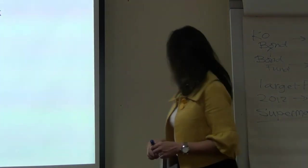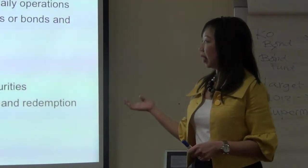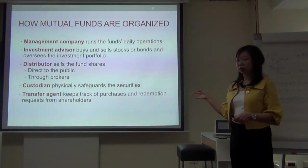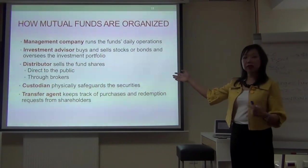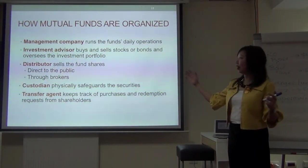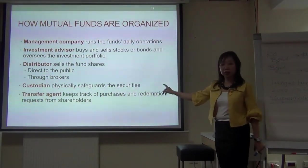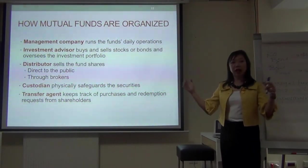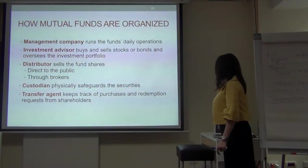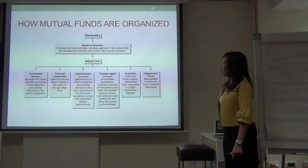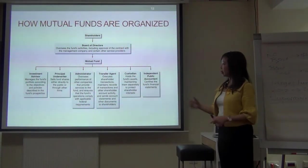How are mutual funds organized? You have a management company, an advisor, a distributor, a custodian, and a transfer agent. The person you most likely interact with when buying a fund is the distributor — the seller of the fund, the one who earns money from you that you may not realize. The fund is managed by an advisor, and a custodian keeps track and ensures accountability.